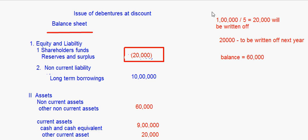We have seen the journal entries pertaining to issue of debentures at premium and discount, and we have also seen how to make the balance sheet in both cases. You will have to remember the writing off of the total discount over a period of five years. With that I end today's session, bye.